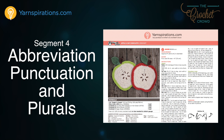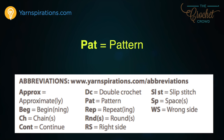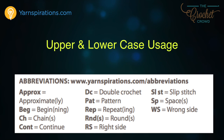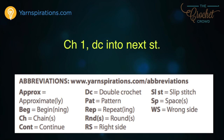Now let's move along to abbreviation punctuation and plurals. Notice that the abbreviation is first, followed by the long form — for example, PAT equals pattern. You will notice that each abbreviation in the key has an uppercase first letter, only because it's listed here with proper punctuation. If the abbreviation starts a new sentence, the first letter will be capitalized; if it's midway through a sentence, it will be lowercase. The meaning is still the same regardless of upper or lowercase letters — there is no physical difference in what you should be doing as a crochet stitch.